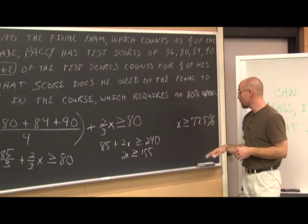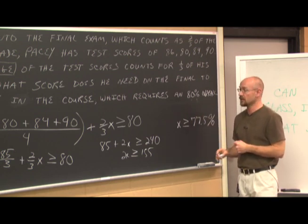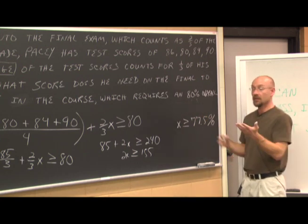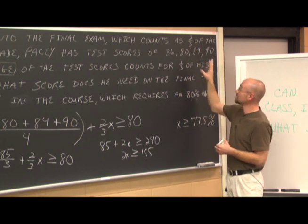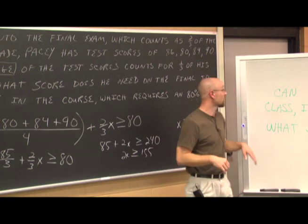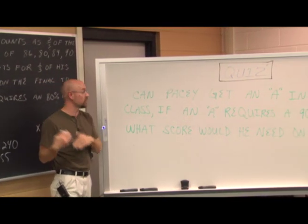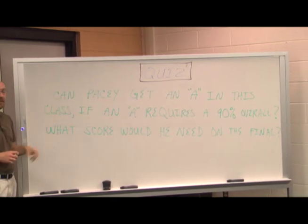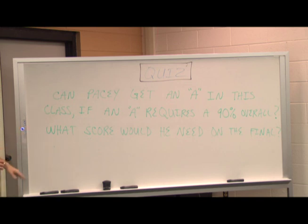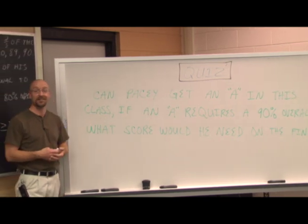It's important to always state units in any story problem. So 77.5% is the score Pacey must get on the final exam to get a B in the class. Now, using the same given information from this problem, try this on your own: can Pacey get an A, which requires a 90% overall, and what score would he need on the final? Set up the equation and solve it yourself. Good luck, and thank you for watching.